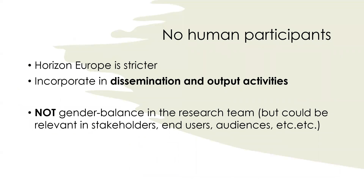The most difficulty in answering the gender dimension requirement happens if your research does not involve human participants at all, particularly in hard sciences. I've seen successful applications where they simply mention that gender dimension is not relevant to their research, but in the Horizon Europe program the requirement to justify that statement became stricter compared to earlier Horizon 2020. A good strategy is probably to try to incorporate the gender dimension in the dissemination and output activities of the project — showing that you thought of ways to promote gender equality through your project activities, without needing to mention the gender balance in your research team.